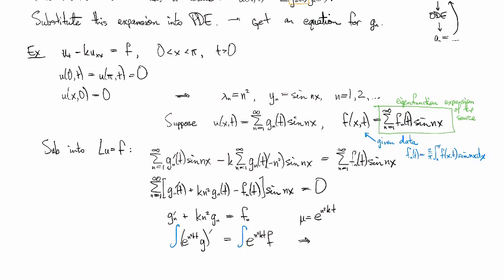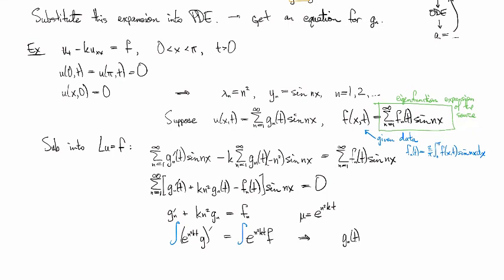The usual techniques give us that GNT is going to be the integral from zero to t of E to the minus N squared t minus tau FN of tau d tau. Oh, sorry, I skipped a step there. This is going to be GN of zero plus this guy.